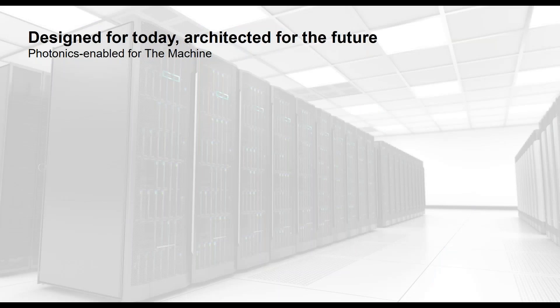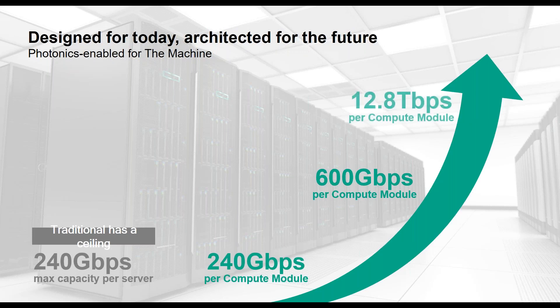Let's talk about photonic-ready for just a second — this is a big differentiator between Synergy and some other infrastructure on the market today. Current workloads have a traditional ceiling of about 240 gigabits per second per server. As we move forward with newer modules and interconnects, higher-speed bandwidth will be required. The Synergy frame is designed not only to deal with today's 240 Gbps limit but to scale up through paths between 600 Gbps and up to 12.8 terabits in the future.